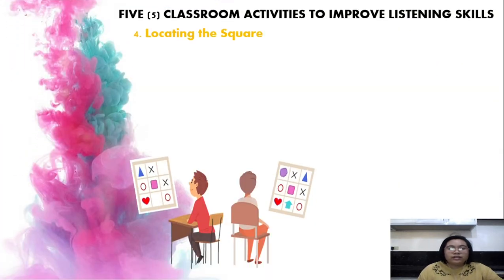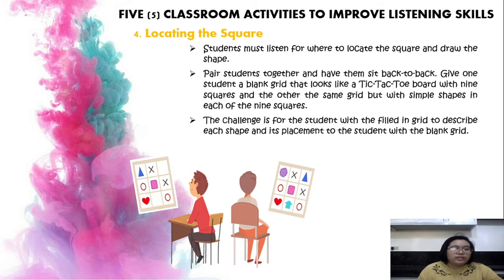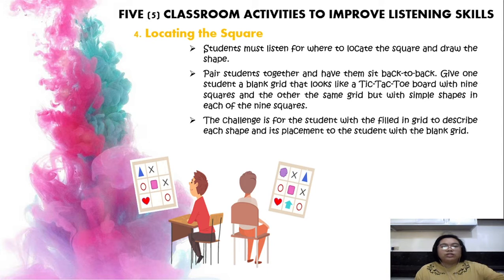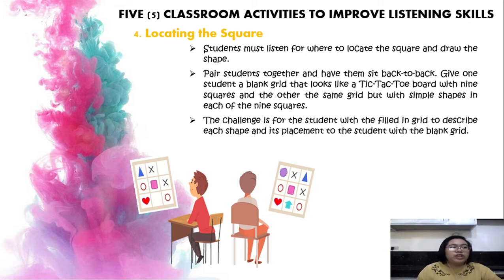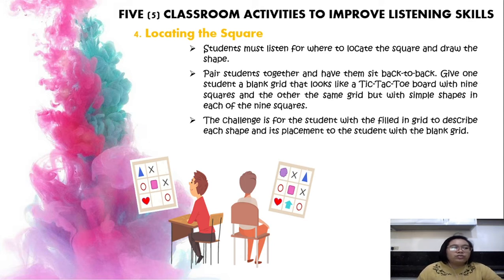The fourth activity is called Locating the Square, which is similar to the Describe the Photo activity. Students work in pairs — one student is given a grid, like a tic-tac-toe board with shapes in each square, while the other student is given a blank grid. The task is to draw the shapes correctly according to the description of the partner who holds the paper with the properly located shapes.